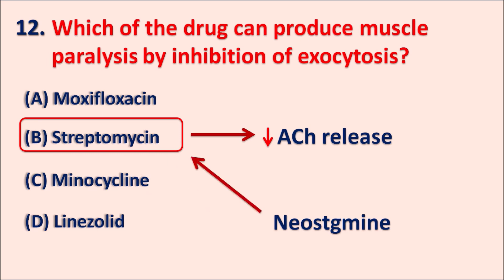Aminoglycoside antibiotics mainly produce two important side effects: ototoxicity and nephrotoxicity. Apart from these two, muscle paralysis is also observed due to inhibition of acetylcholine release from the presynaptic nerve terminal. These are a few of the important concepts in antibacterials; in our next video we will cover more important concepts along with questions and answers.